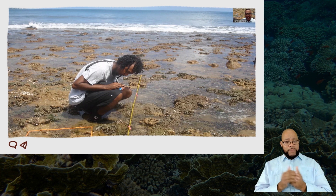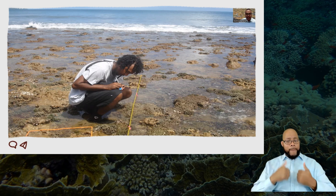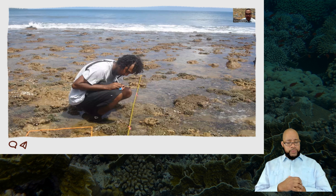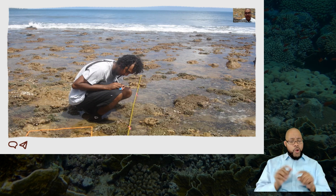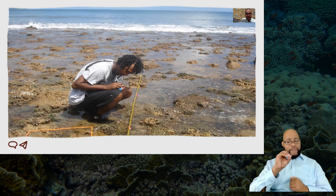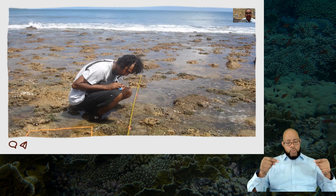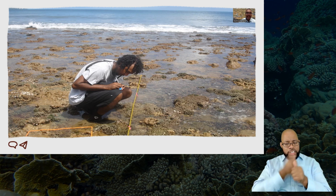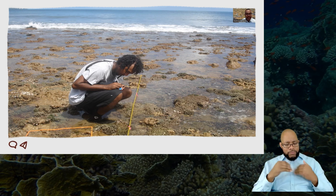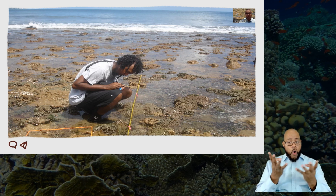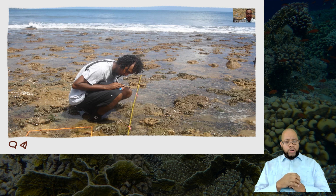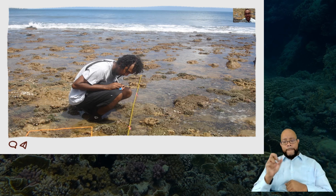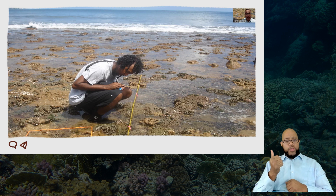Collecting data on the reefs on benthic components — for this analysis, I used the line transect as well as a 50 centimeter by 50 centimeter quadrant. The key goal is to calculate the frequency of each particular type of benthic component, such as hard corals, soft corals, coral rubble, rocks, and specific types of invertebrates such as sea cucumbers, sea urchins, and other cnidarians typically found on reefs.